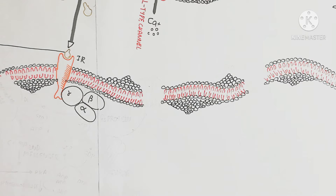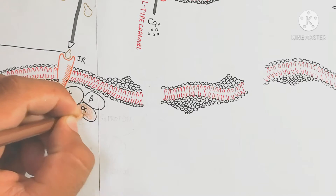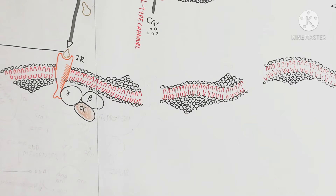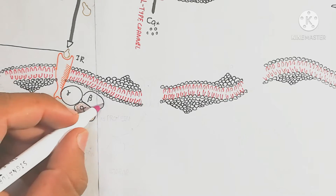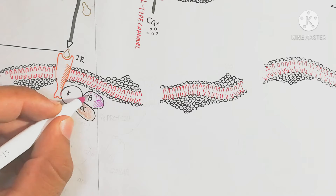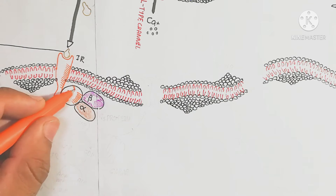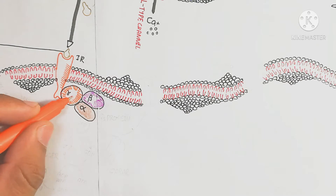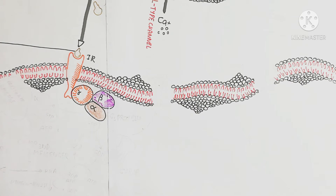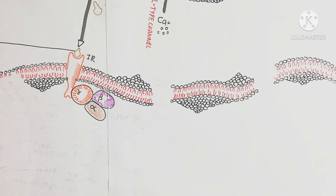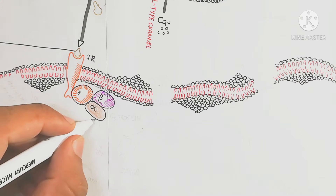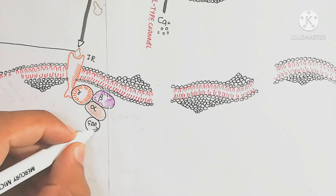Here the insulin-producing beta cell releases insulin. The glucagon-producing alpha cell contains an insulin receptor. The primary messenger — also called a ligand — is insulin, which binds with the insulin receptor and activates the internal G protein, also known as G-coupled receptor protein. This G protein is a trimeric unit containing alpha, gamma, and beta subunits.